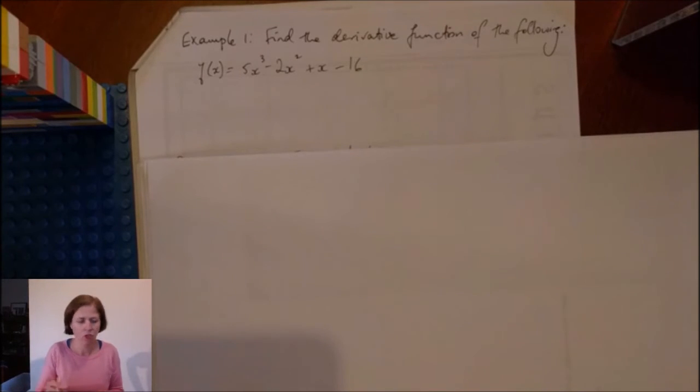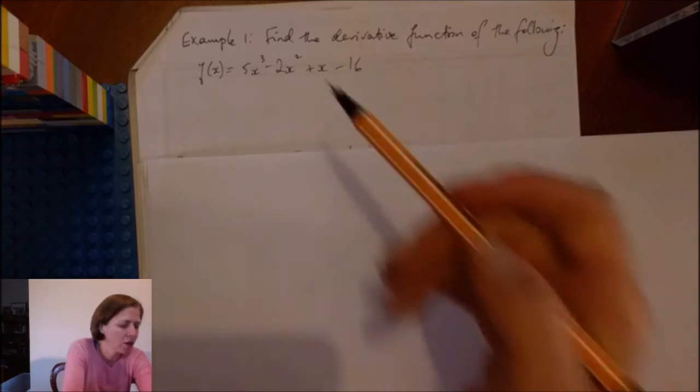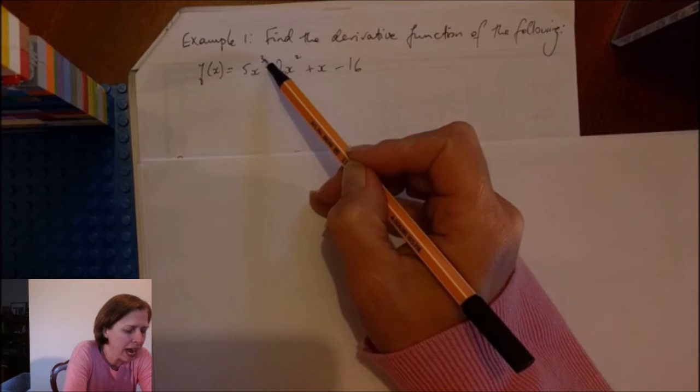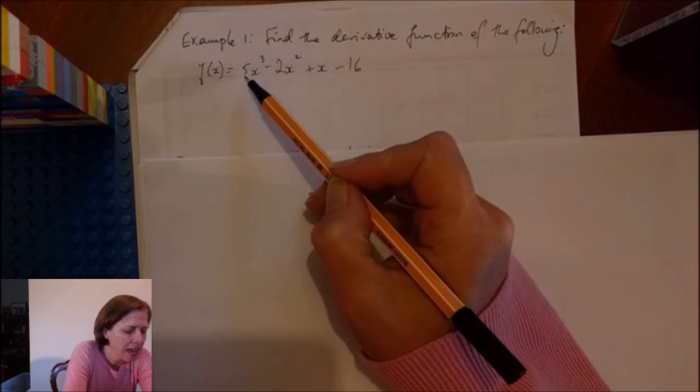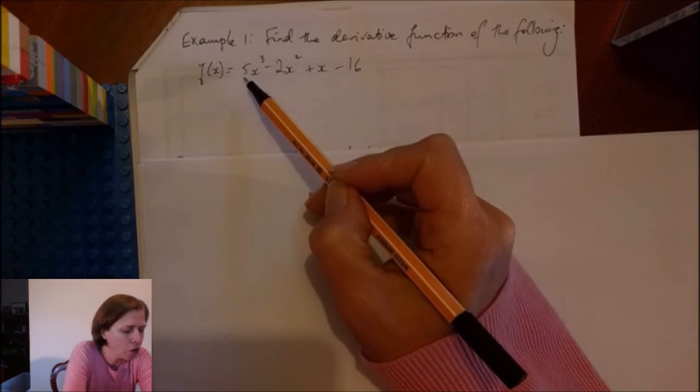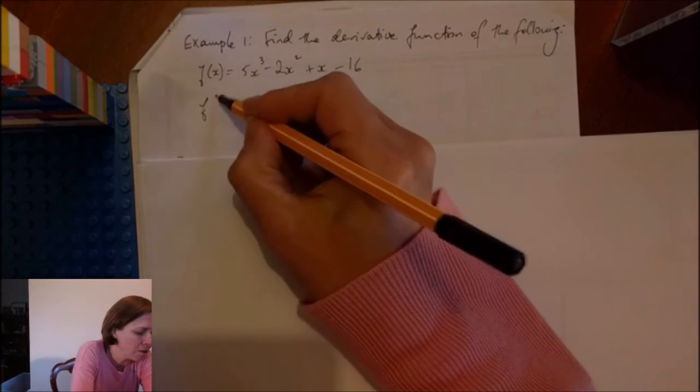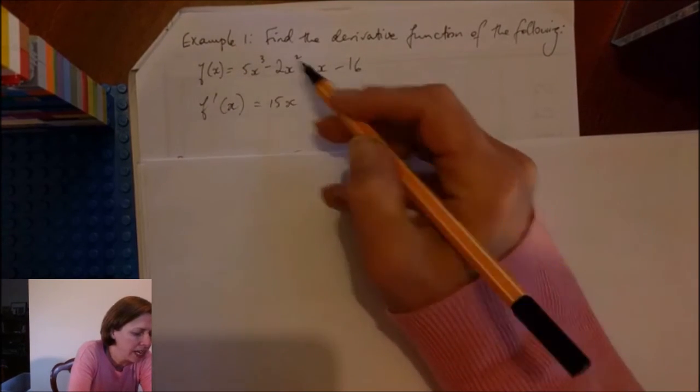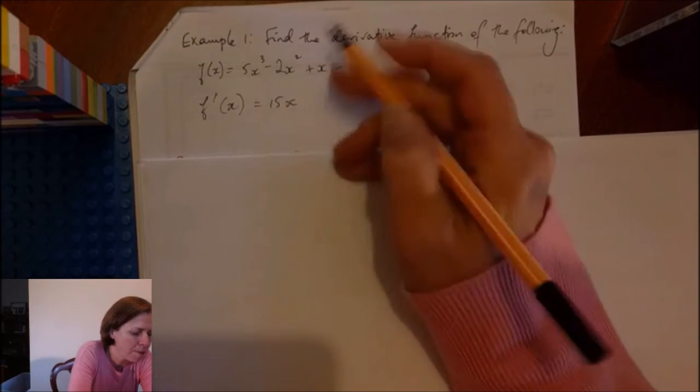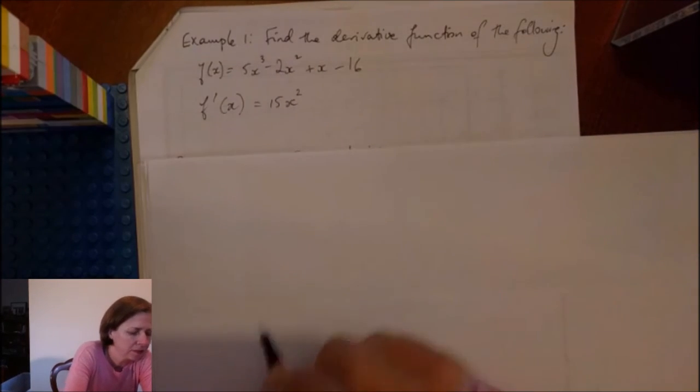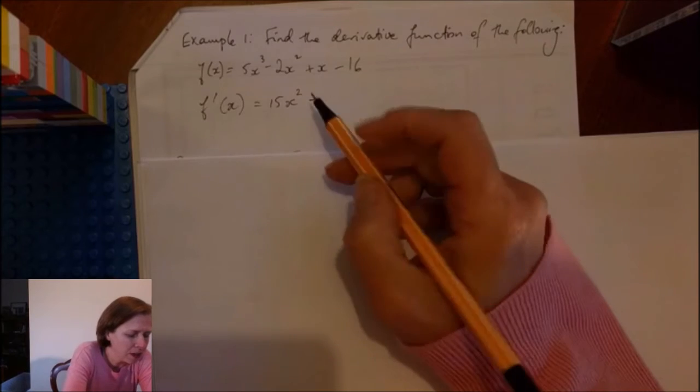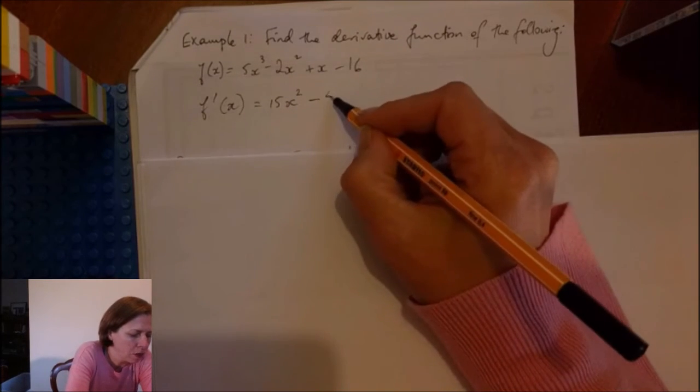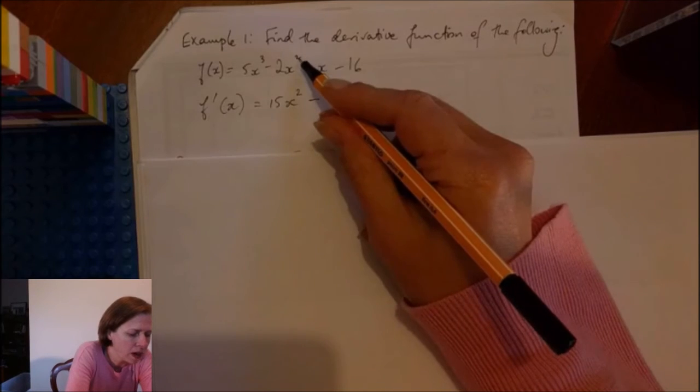This is revision for you guys from last year. So I'm going to multiply these two numbers together. This is the power of the original function and the coefficient of the original function. So f'(x) is going to be 15 times x and then I subtract 1 from my power squared minus. That's not going to be affected. I'll multiply those together. 2 times 2 gives me 4x. Take 1 from the power.